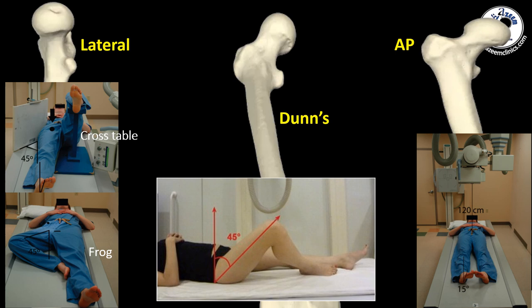We use different views centered on the head and neck junction for proper delineation of the anatomy of this area. The lateral views, either the cross-table lateral or the frog lateral position, will show you the most anterior part of the head and neck junction. The Dunn view, with external rotation and flexion, will show you more of the anterosuperior part of the head and neck junction, approximately from the three o'clock position up to the one o'clock position.